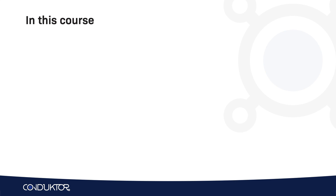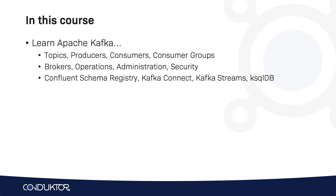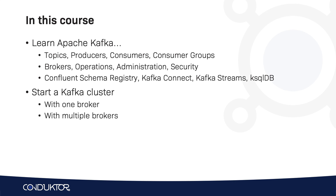So what are you going to find in this course? We're going to learn Apache Kafka — that includes topics, producers, consumers and consumer groups, also brokers, operations, administration, and security, as well as the Kafka extended API such as the Confluent Schema Registry, Kafka Connect, Kafka Streams, and ksqlDB. We will be starting a Kafka cluster with one broker and also with multiple brokers, and we'll also include a Schema Registry, Kafka Connect, ksqlDB, et cetera.